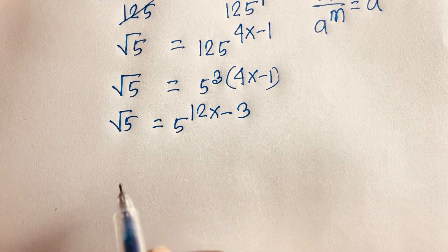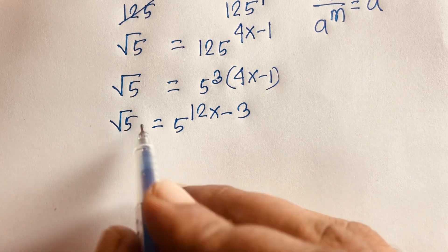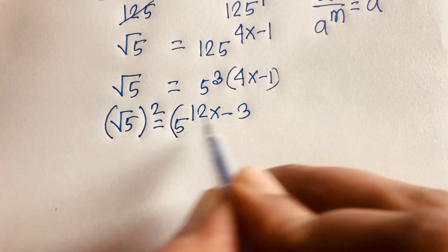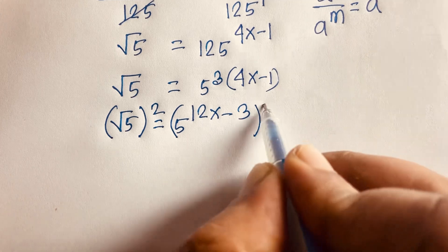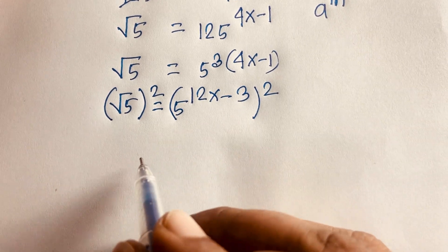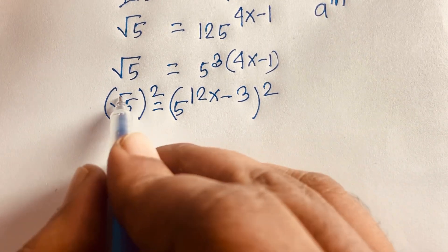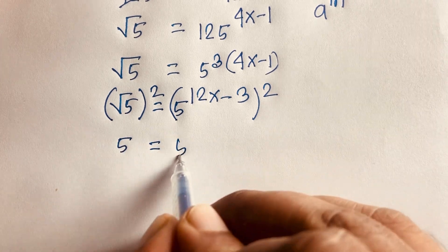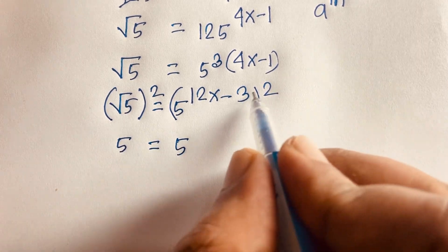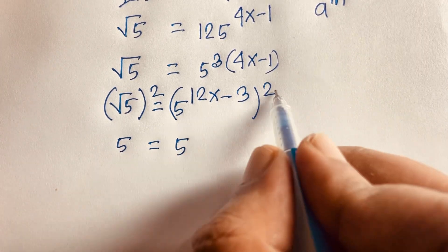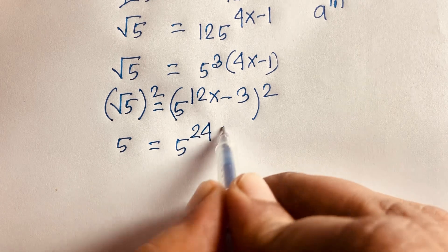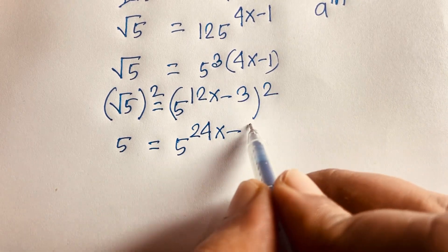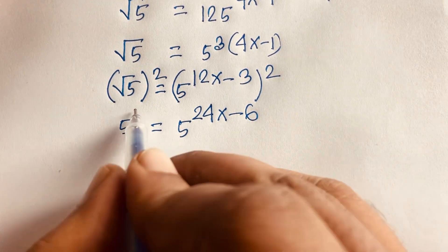If I want to remove the square root, I use whole square on both sides again. Then the square root is cancelled, and we find out 5 equals 5 to the power 12 times 2, which is 24x minus 3 times 2, which is 6.